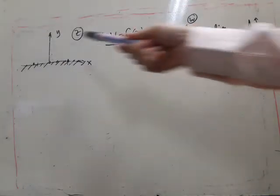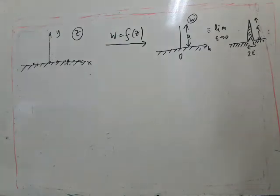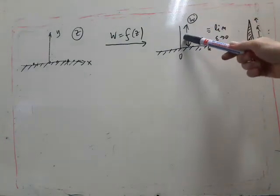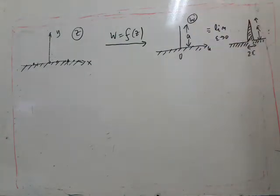So in this problem, we're going to map the upper half plane, upper half z plane, to this region here in the w plane, which is obtained from the limit as epsilon tends to zero of this shape.